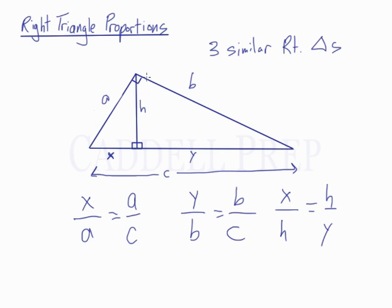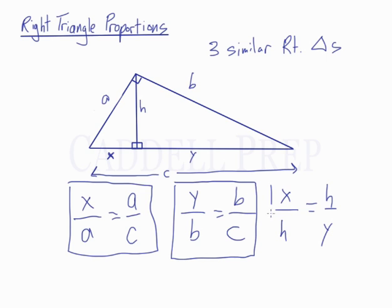So a good strategy when you have a diagram like this is to label the sides and write down these proportions. This way, if you're searching for one of these sides and you have measurements, you can quickly determine which one of these three proportions you're going to use.